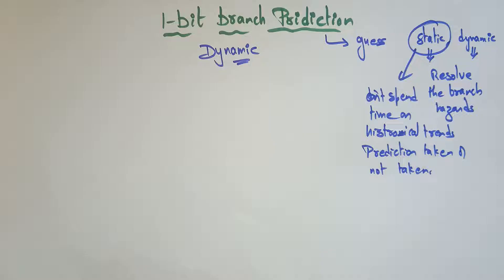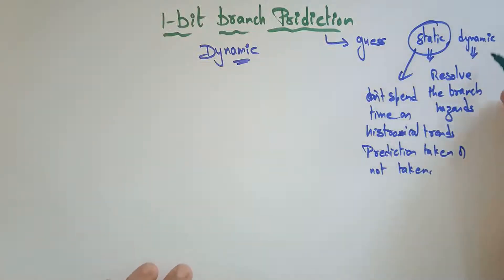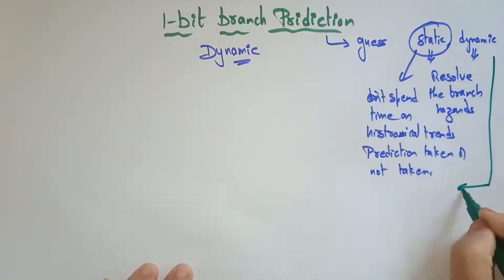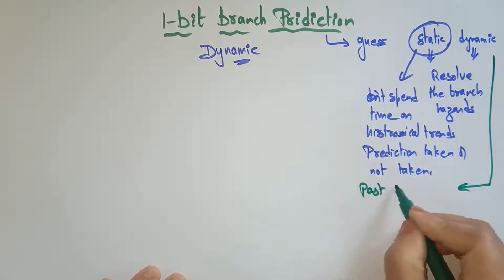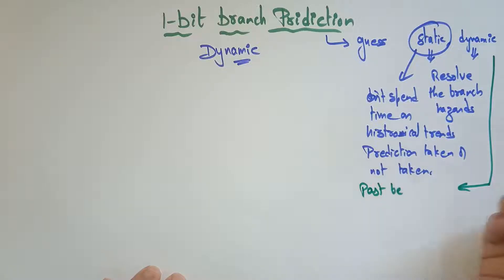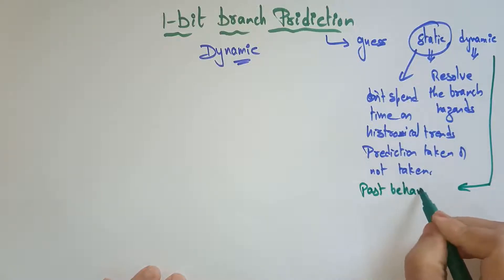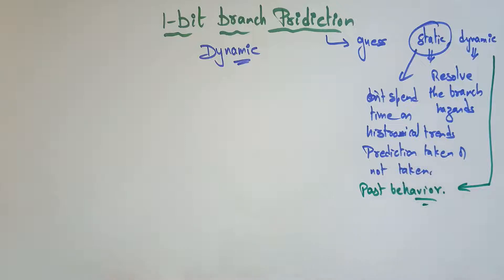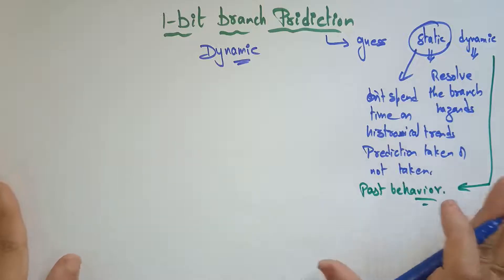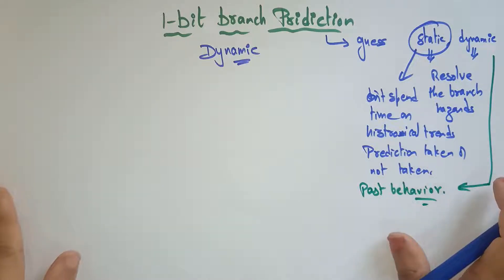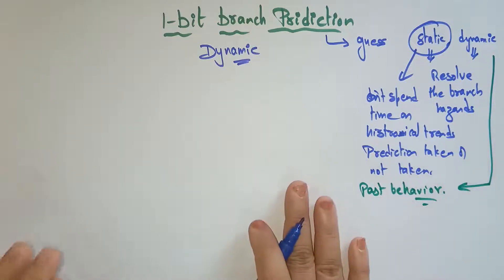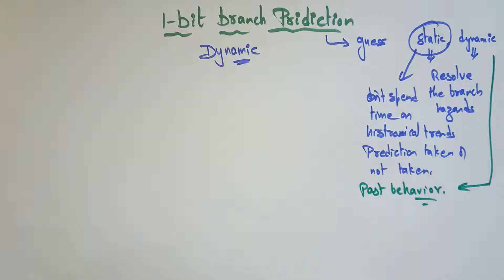Whereas dynamic depends on past behavior — that is, the historical trends. It depends upon past behavior. This is what we saw in previous videos about static and dynamic. Now let's have a look at 1-bit branch prediction.